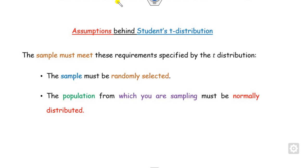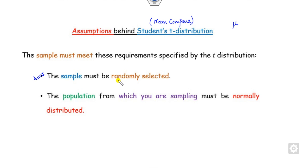What are the assumptions behind the Student t-test? Remember, this test is used to compare means — you compare the population mean using the Student t-test. The assumptions are: the sample must be randomly selected, and the population from which you are sampling must follow the normal distribution.